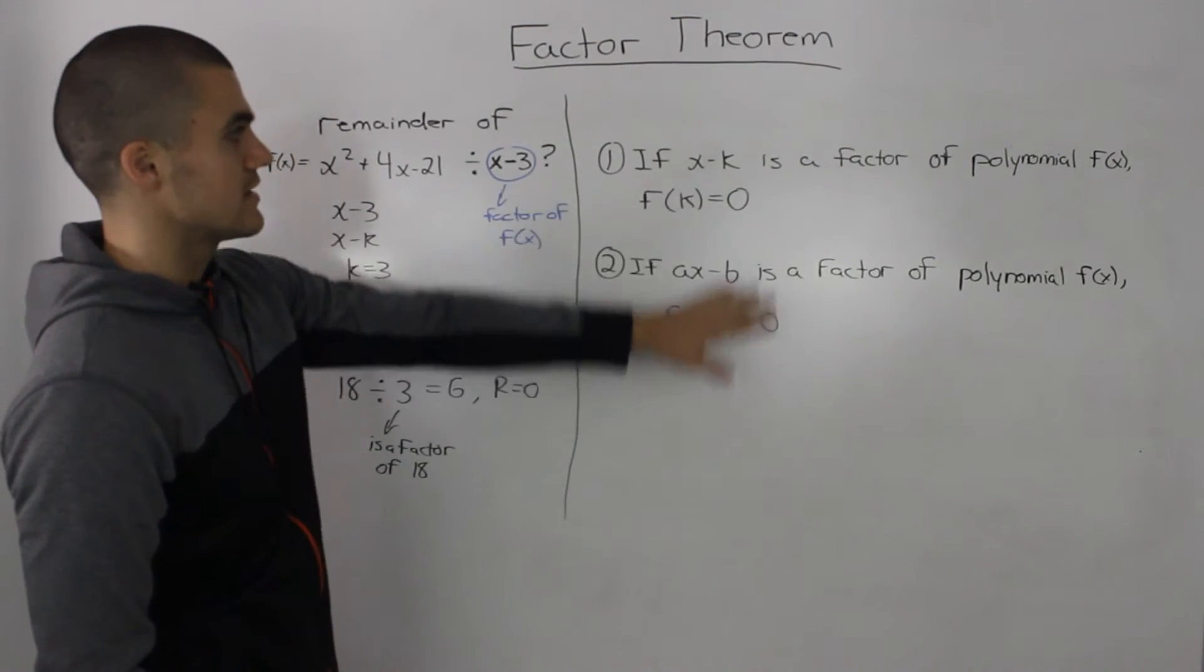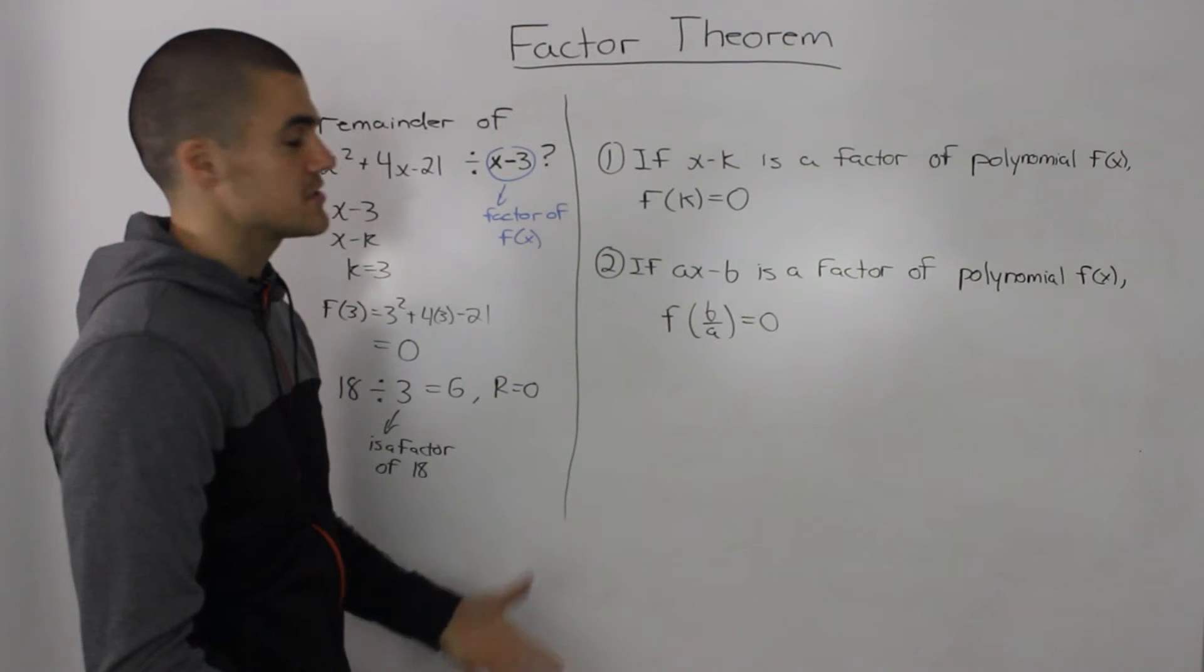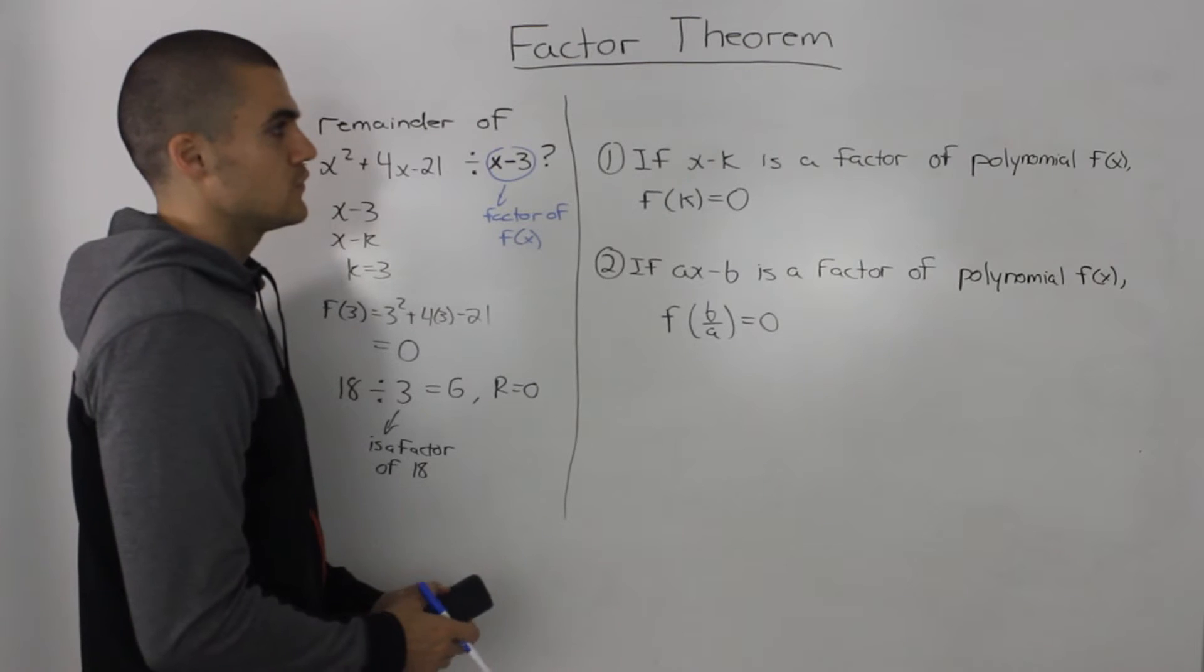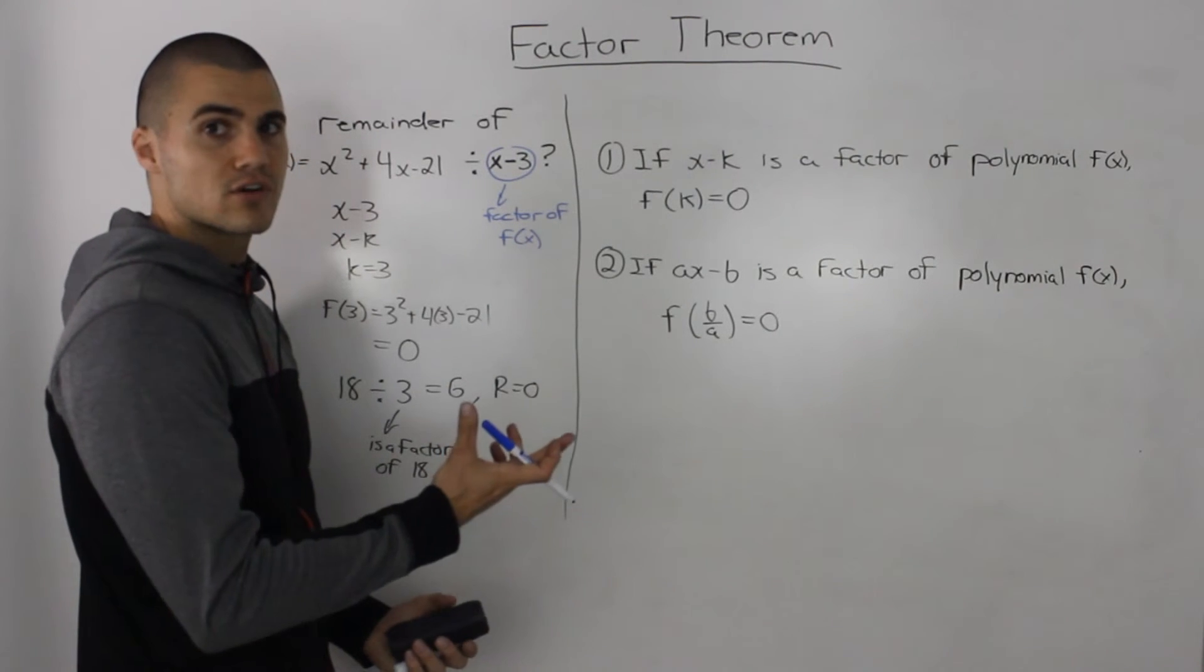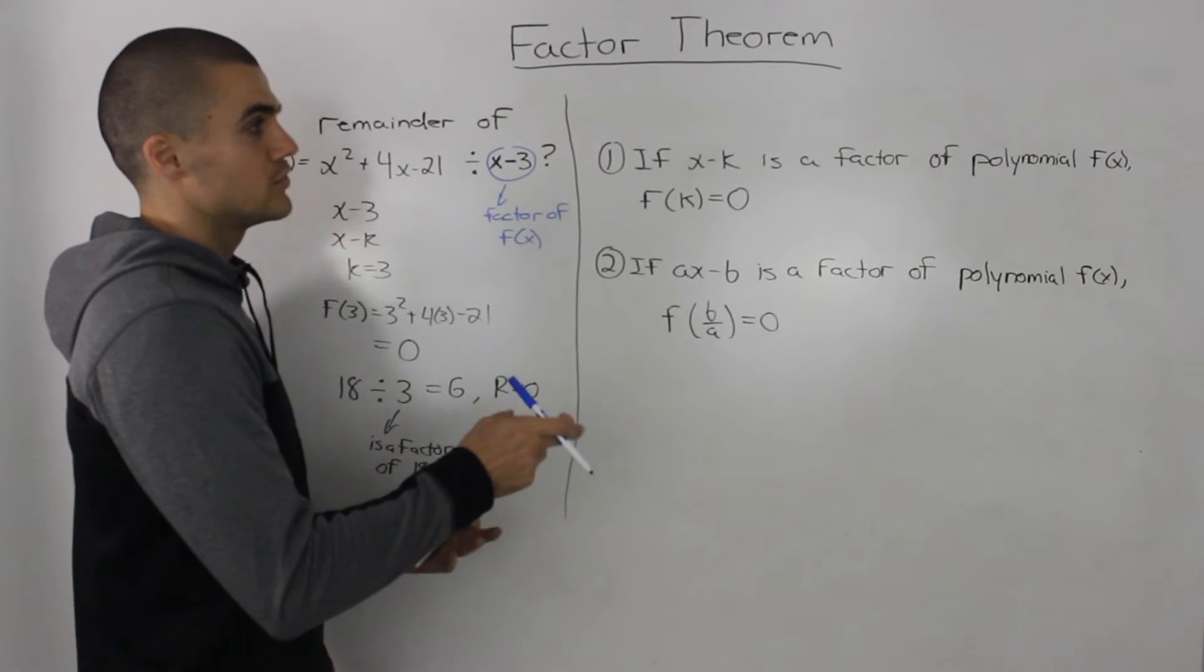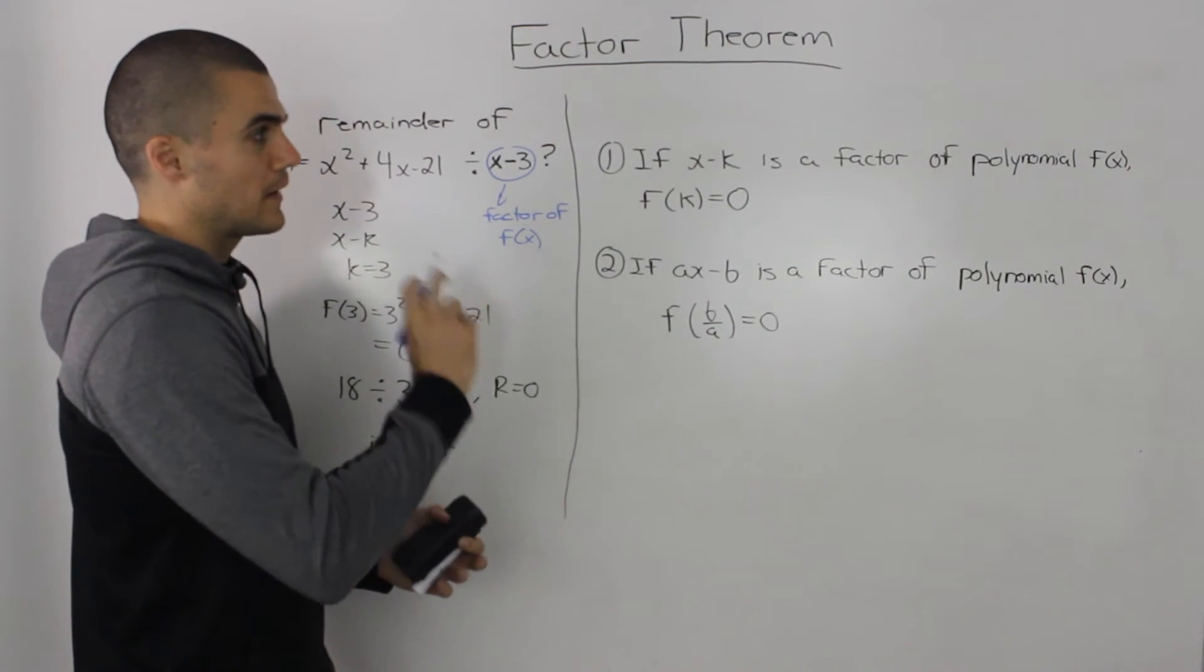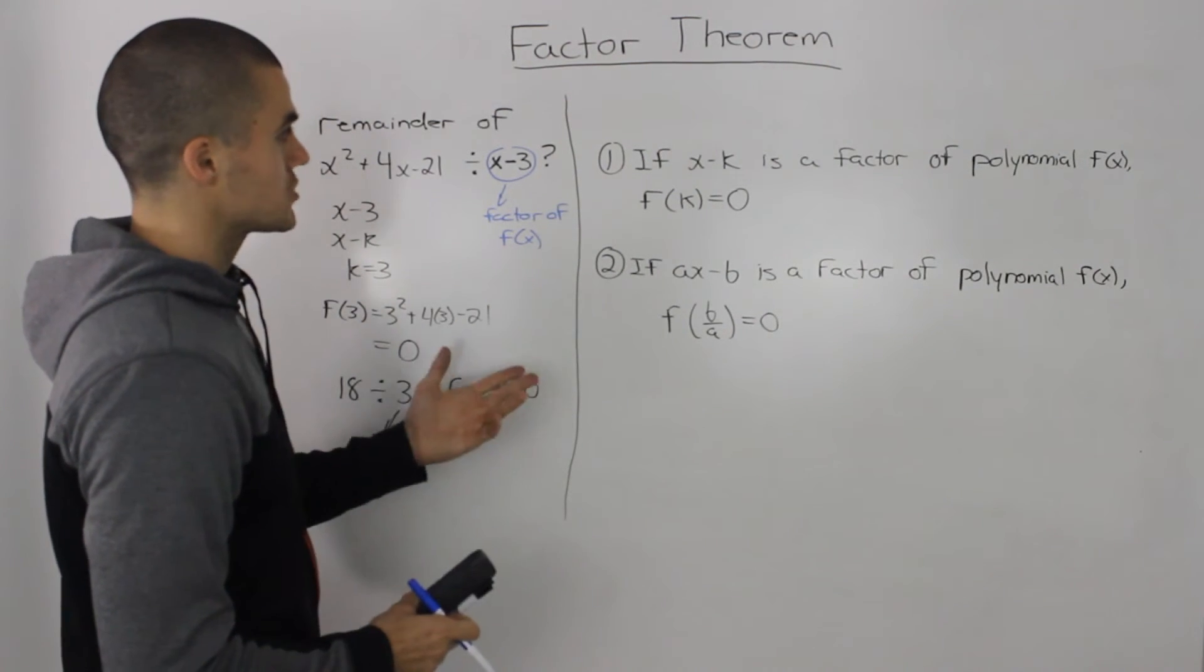Let's take our result and summarize it in a general way, and this here is the factor theorem. It's actually very similar to the remainder theorem. Basically, it's saying that if you have a divisor that's a factor, when you divide the dividend by that factor, the remainder is going to be 0.